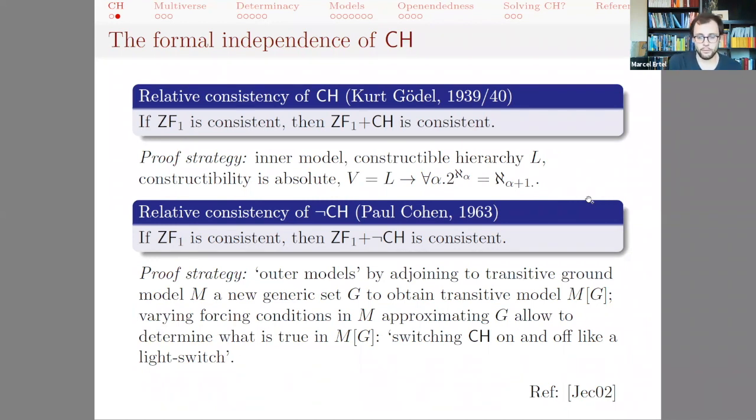This hypothesis turned out to be extremely difficult to prove for a very deep reason, namely that it is in fact independent from the customary axioms of set theory. So Gödel proved in 1939-1940 the consistency of the continuum hypothesis relative to the axioms of first order set theory, and this proof strategy was essentially to construct an inner model, the constructible hierarchy L, in which the continuum hypothesis would be true.